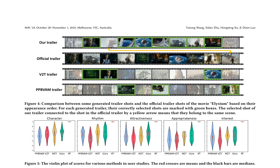The authors present a visual comparison between generated trailer shots and the official trailer shots of the movie Elysium in Figure 4, where correctly selected shots are marked with green boxes and connected to corresponding shots in the official trailer by yellow arrows. This visualization highlights the efficacy of the proposed method in selecting relevant shots. Figure 5 displays the violin plot of user study scores, showcasing the consistent outperformance of the proposed method in five aspects: character, rhythm, attractiveness, appropriateness, and interest.